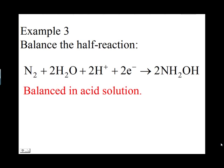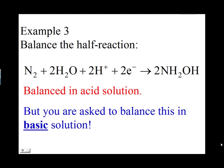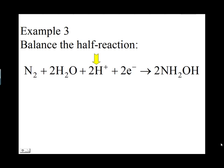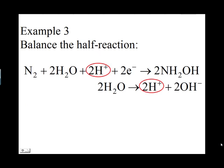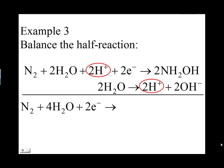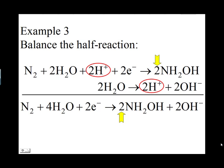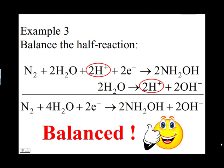The equation is now balanced in acid solution, but you are asked to balance it in basic solution. There are two H+ ions on the left side, so add two times the equation H2O → H+ + OH⁻ to cancel out the two H+ ions. The two H+ on the right side of that equation cancel with the two H+ on the left, giving N2 + 4H2O + 2e⁻ on the left and 2NH2OH + 2OH⁻ on the right. The half reaction is now balanced in basic solution.